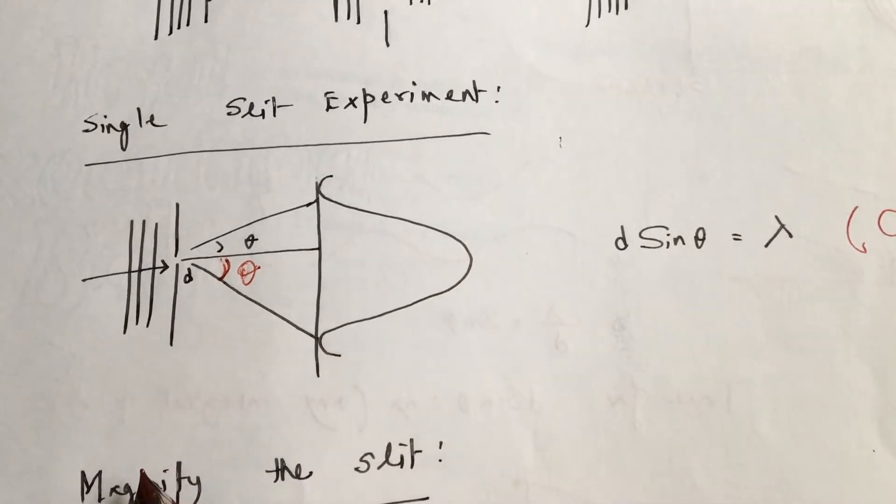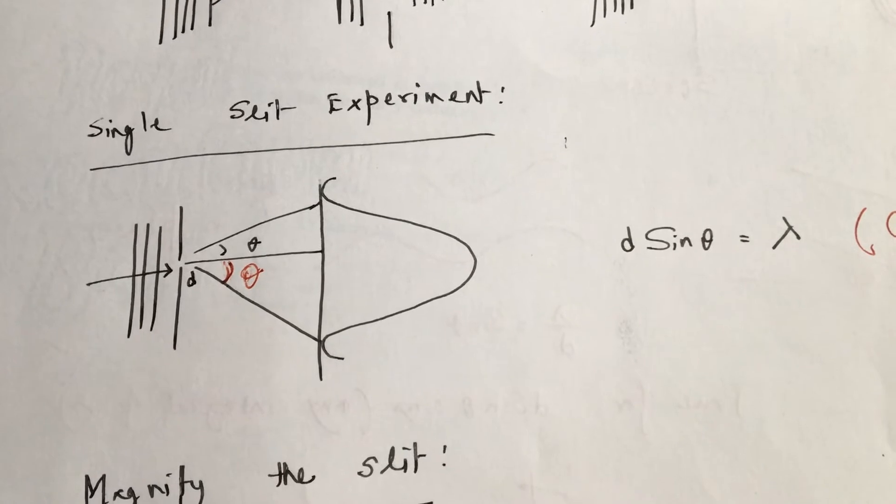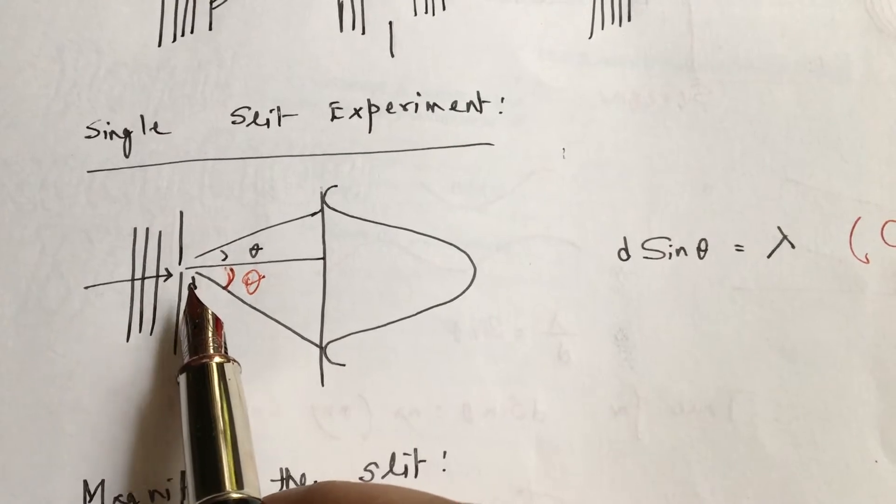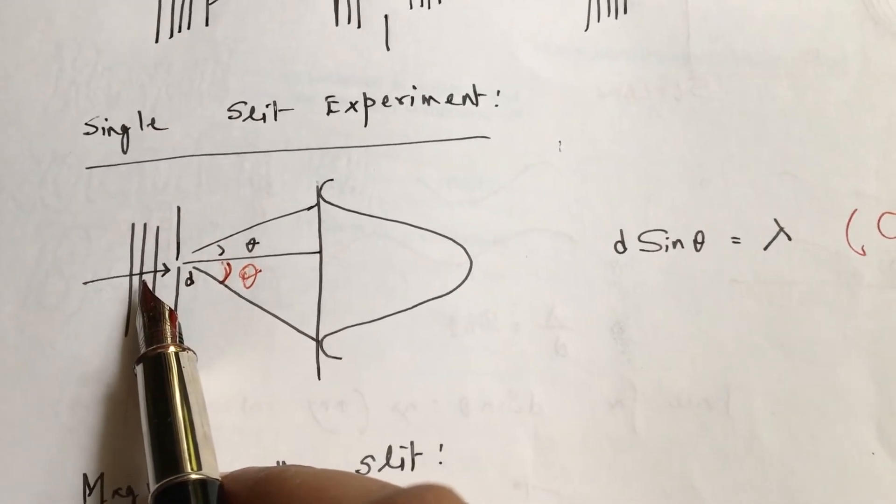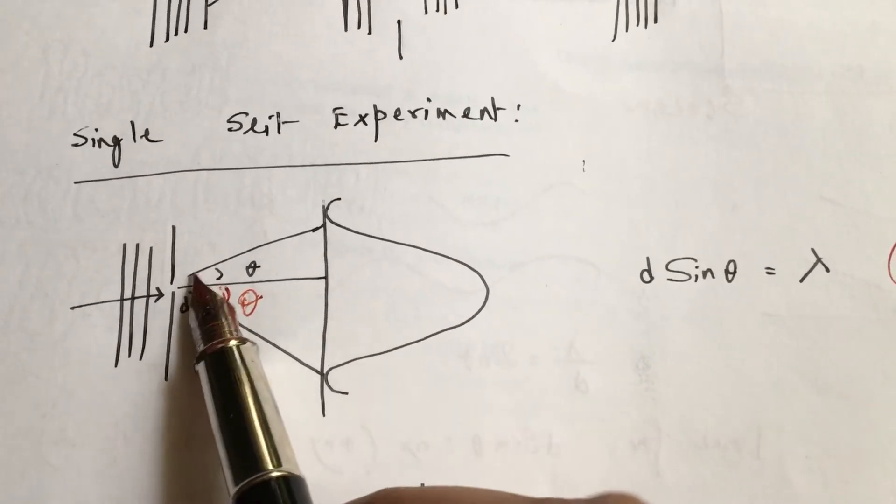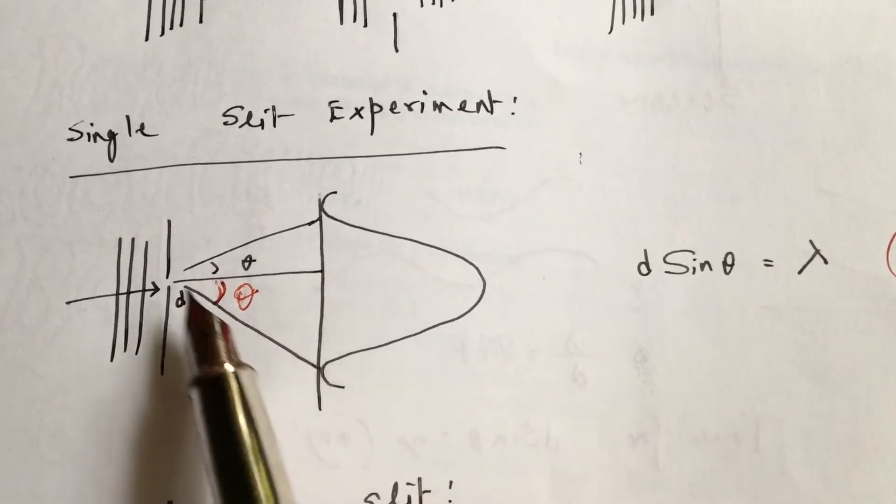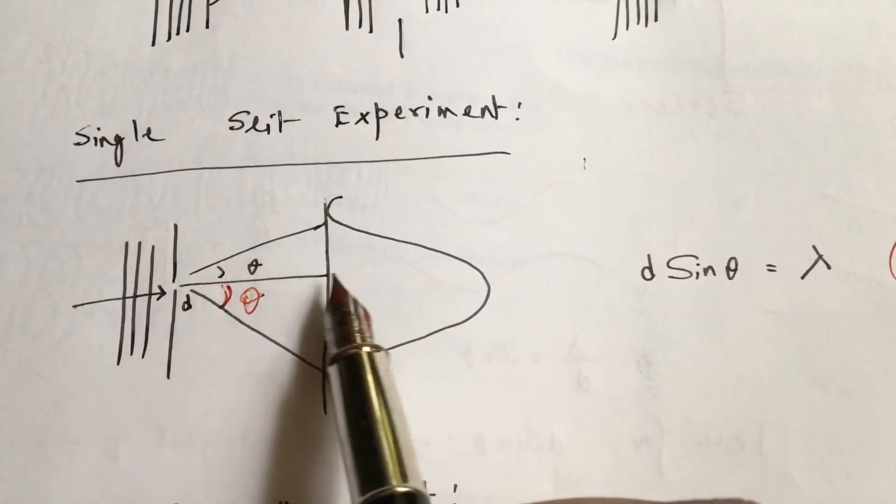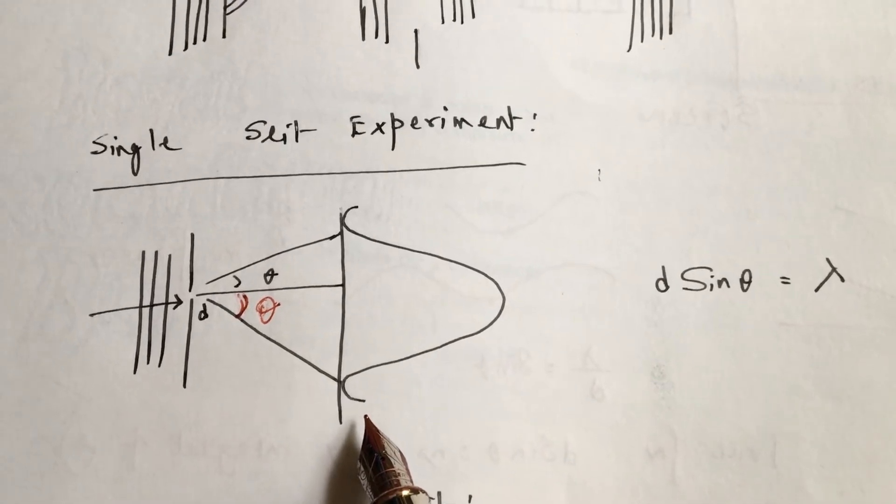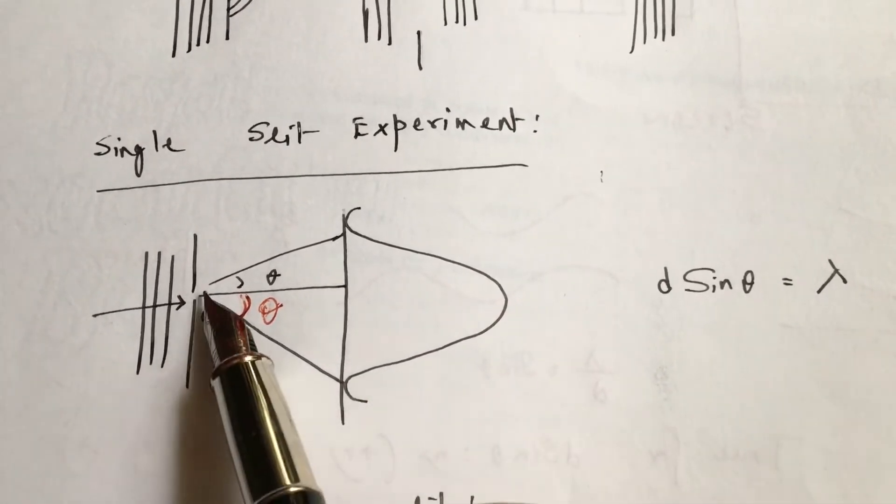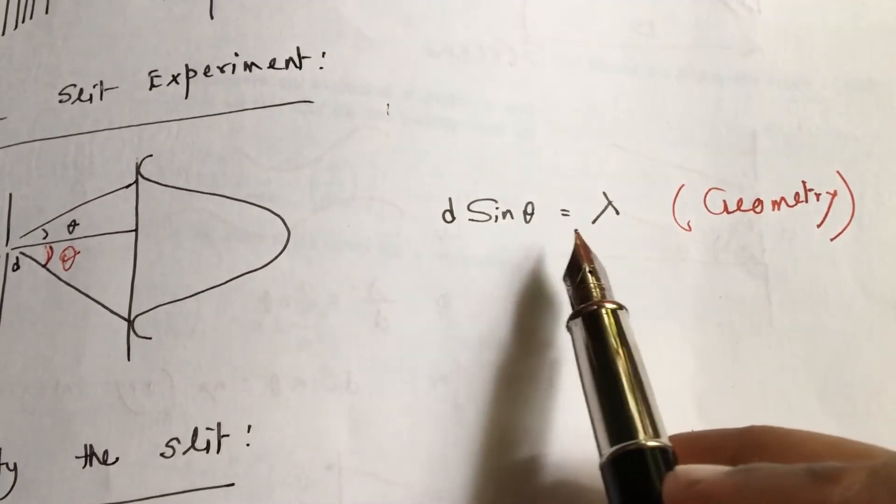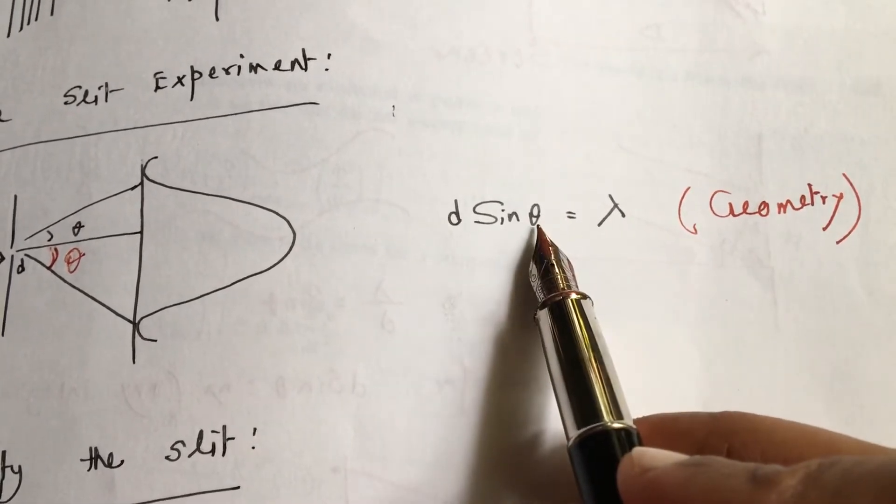If waves are coming from left hand side and get obstructed here, and if the slit width D is compatible with the wavelength lambda, then the waves will diffract from this side and that side of the slit. On the other side we get a very high intensity pattern. This is a geometrical relation between the slit width and the wavelength lambda and its angular spread.